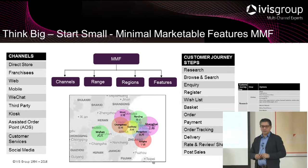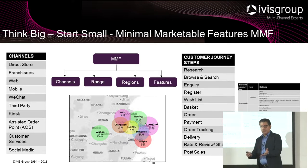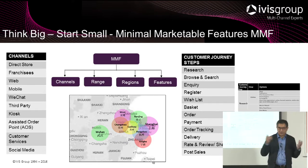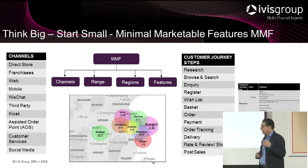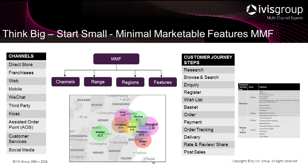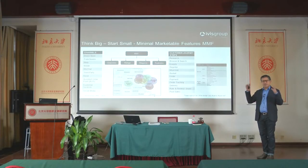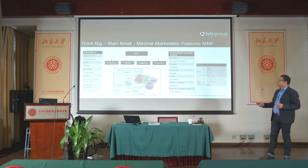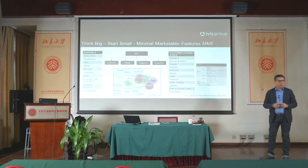Businesses typically want everything immediately — full features, full range, full geographic coverage. But transformation is hard because you're asking people to change the way they do things, which is incredibly difficult on its own, let alone launching new systems simultaneously. You need to make it manageable: have the vision, but start small. Adopting an MMF approach helps you achieve this.